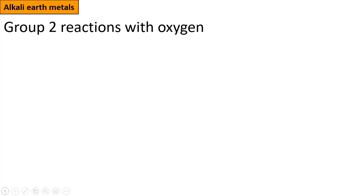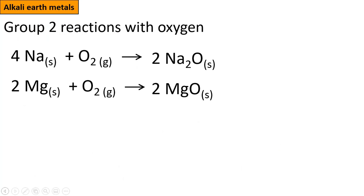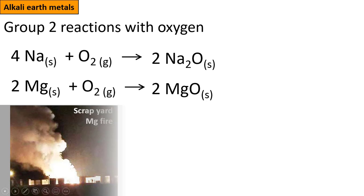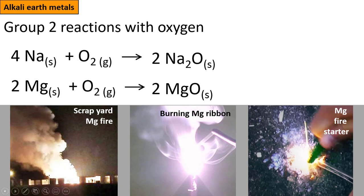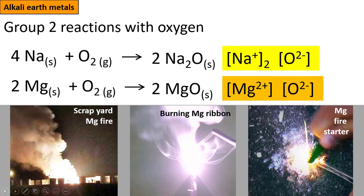What about the elements of group 2? Let's have a look at magnesium. That's the element after sodium. Like sodium, magnesium is flammable. It will burn in oxygen to form a magnesium oxide. The oxide is ionic, like sodium oxide. But magnesium develops a plus two charge on each atom. And so the stoichiometry of the neutral compound is different. In this case, it is one-to-one.